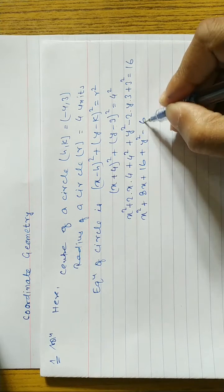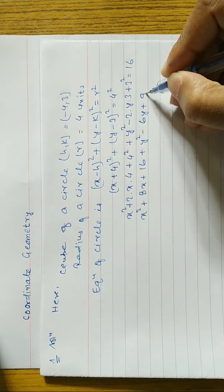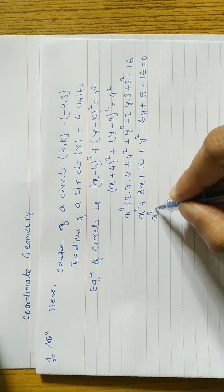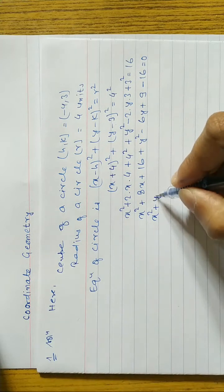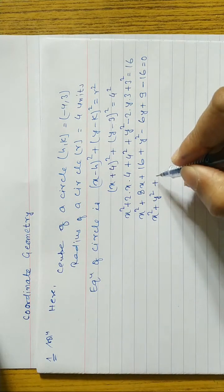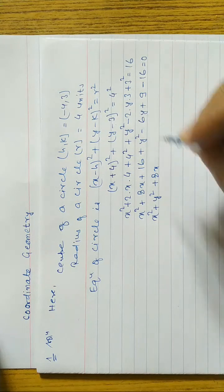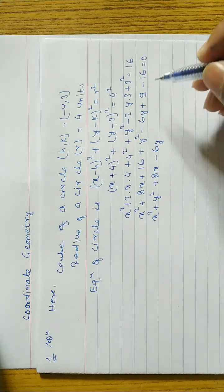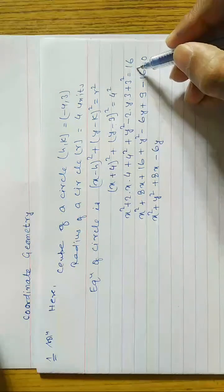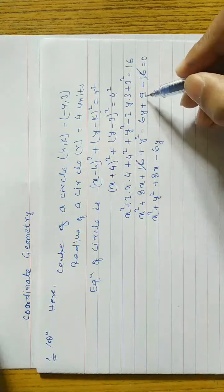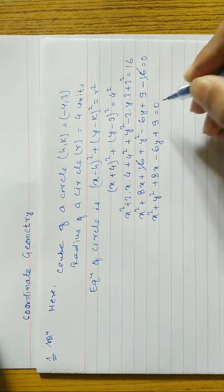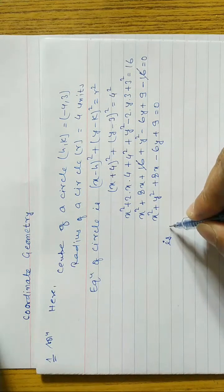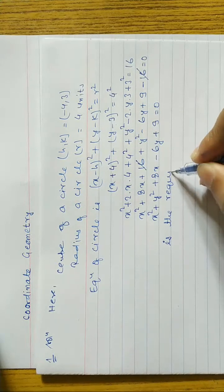So x² + 8x + 16 plus y² - 2×3×y - 6y + 3² = 9, and the right side is 16. Bringing 16 to the left side gives minus 16. Now: x² + y² + 8x - 6y, and for the constants: 16 and -16 cancel, leaving +9, equals zero. This is the required equation of the circle and you will score two marks from here.